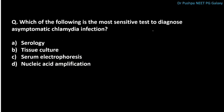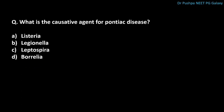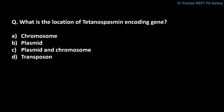What is the most sensitive test to diagnose asymptomatic chlamydia infection? The correct answer is nucleic acid amplification test. What is the causative agent for Pontiac disease? The correct answer is Legionella pneumophila. What is the location of the tetanospasmin-encoding gene? The correct answer is a plasmid.